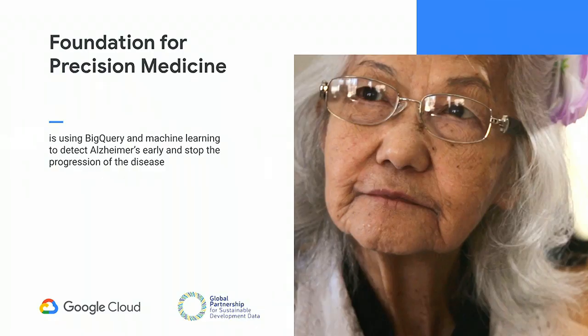The Foundation for Precision Medicine is using BigQuery and machine learning to detect Alzheimer's disease early, with the goal of stopping the progression of the disease. Since there's currently no cure for Alzheimer's, they're taking a different approach: getting ahead of a traditional diagnosis by months or even years, so as to prescribe preventative treatment.